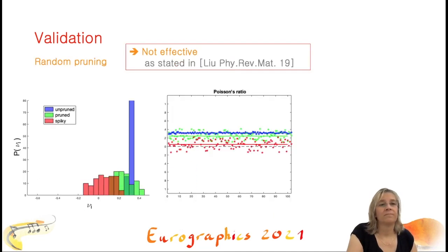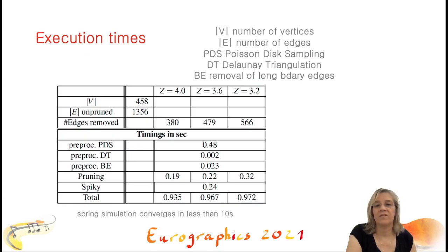And next, we wondered if our method is effective only because we are pruning the edges, or because of our geometric criteria for selecting the edges for pruning. And we therefore studied the effect of random edge pruning followed by the vertex displacement method. And the answer is that our geometric criteria is the key to reach low negative values of the Poisson's ratio. And in this table, we report some statistics on execution times of the method broken down according to different stages.